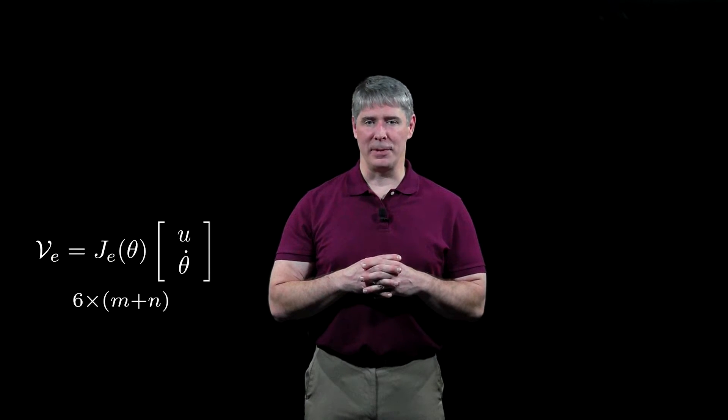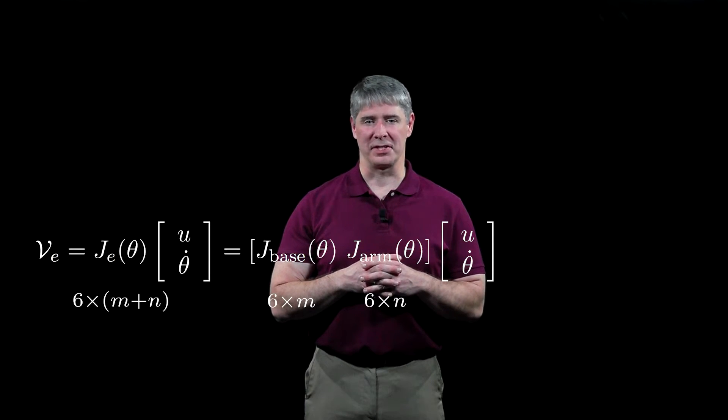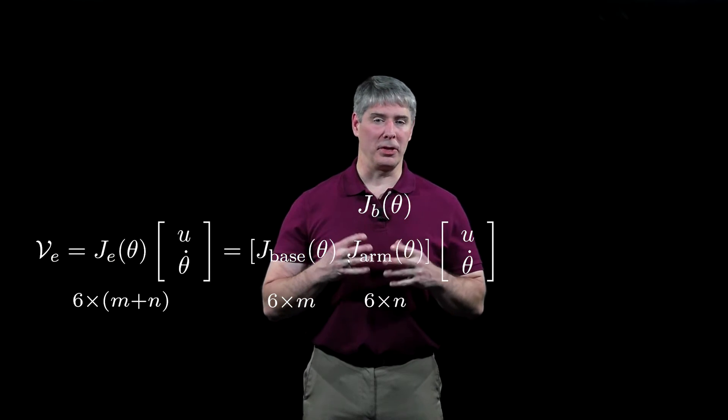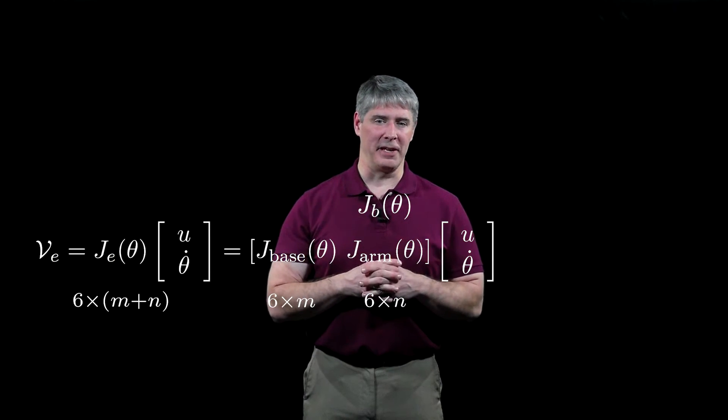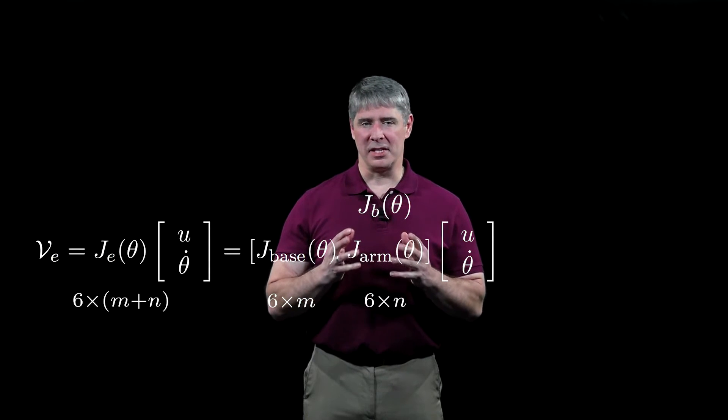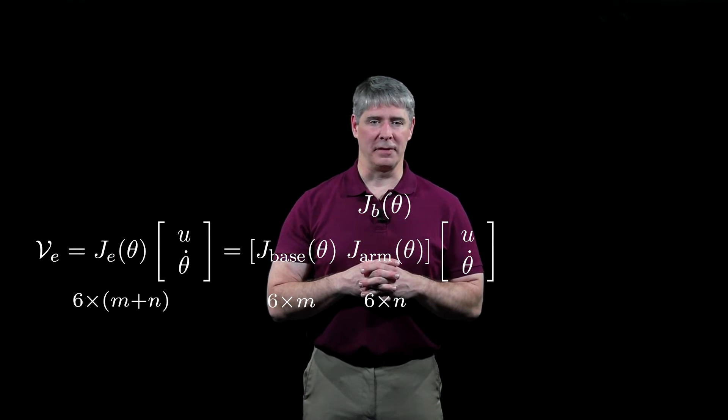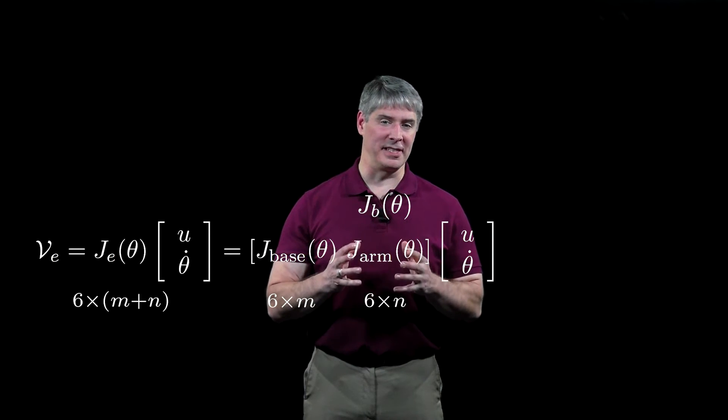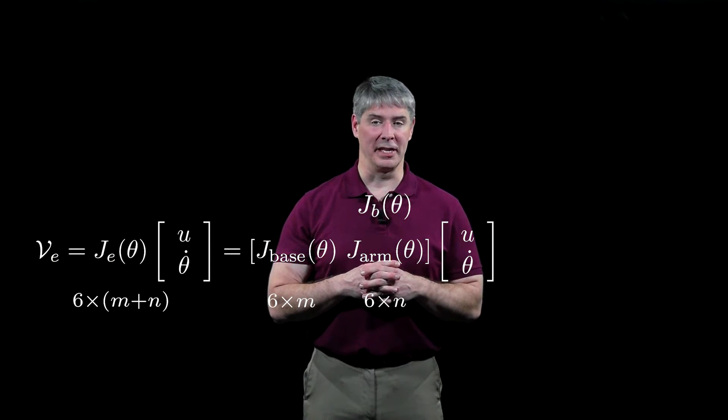The JE matrix can be decomposed into the 6 by m matrix Jbase and the 6 by n matrix Jarm. Jarm is the same as the body Jacobian JB, so the only new thing we need to derive is Jbase. Note that JE only depends on the joint configuration θ, not the chassis configuration q, since the end effector twist expressed in the end effector frame is independent of the chassis position and orientation.